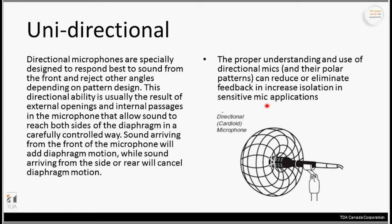Depending on the application, you may want an omni to pick up a general area — like a boardroom table. But in an application where you're walking around a school gym near speakers, there's a high chance of feedback. Having something that focuses right on your mouth, maybe a head-style microphone in a cardioid pattern, might be a better choice in that application to reduce feedback.